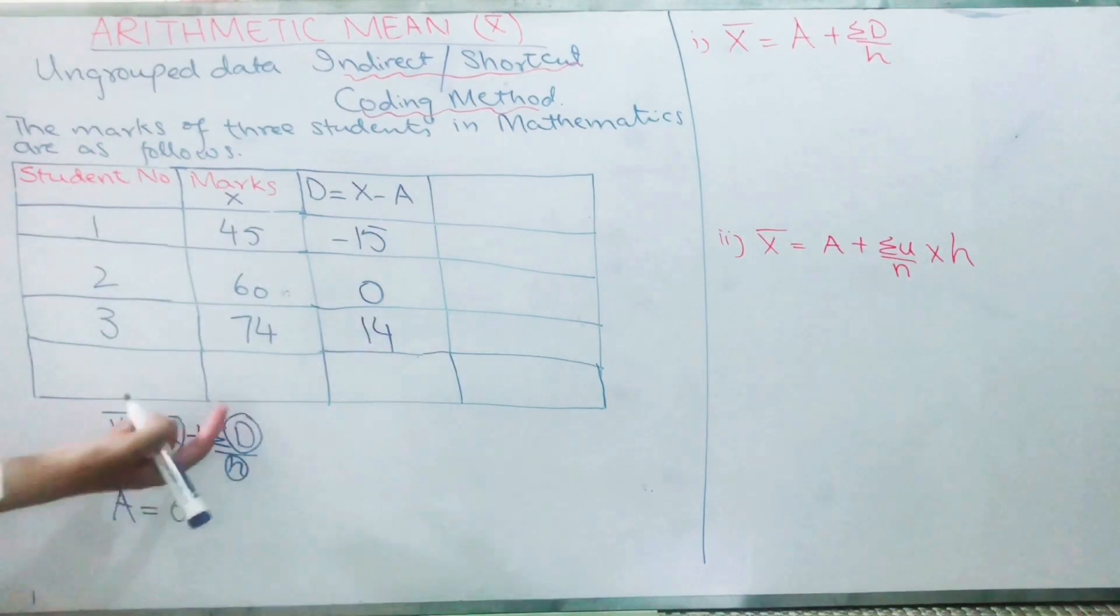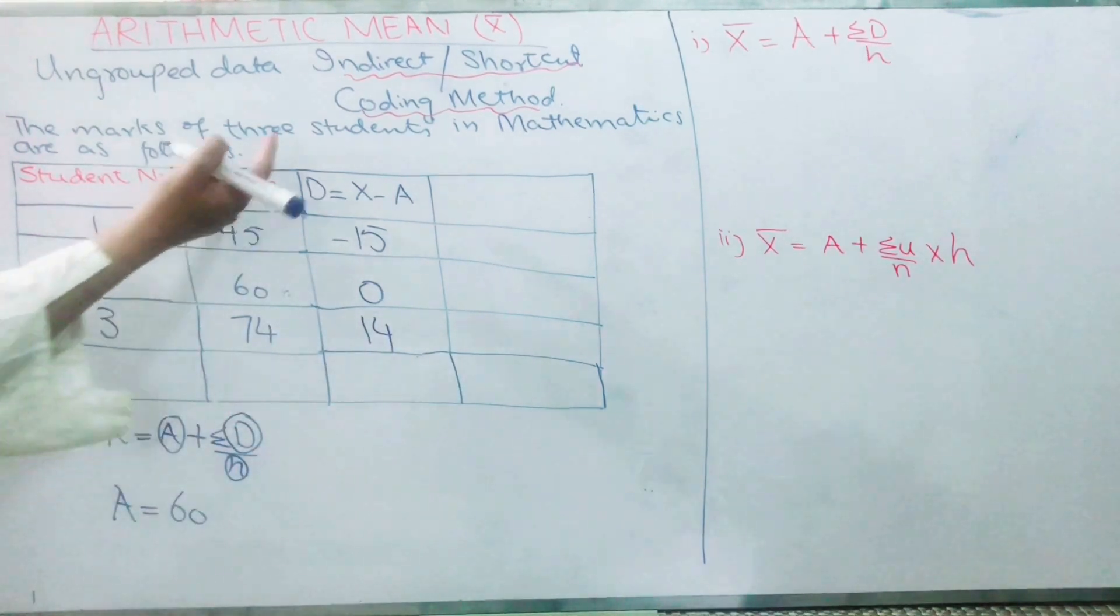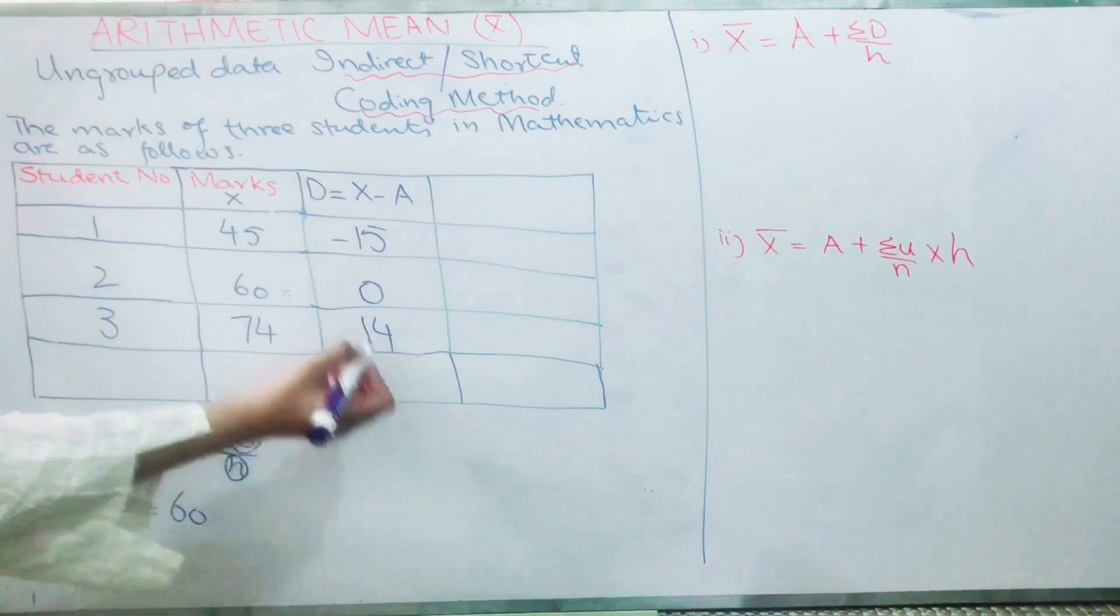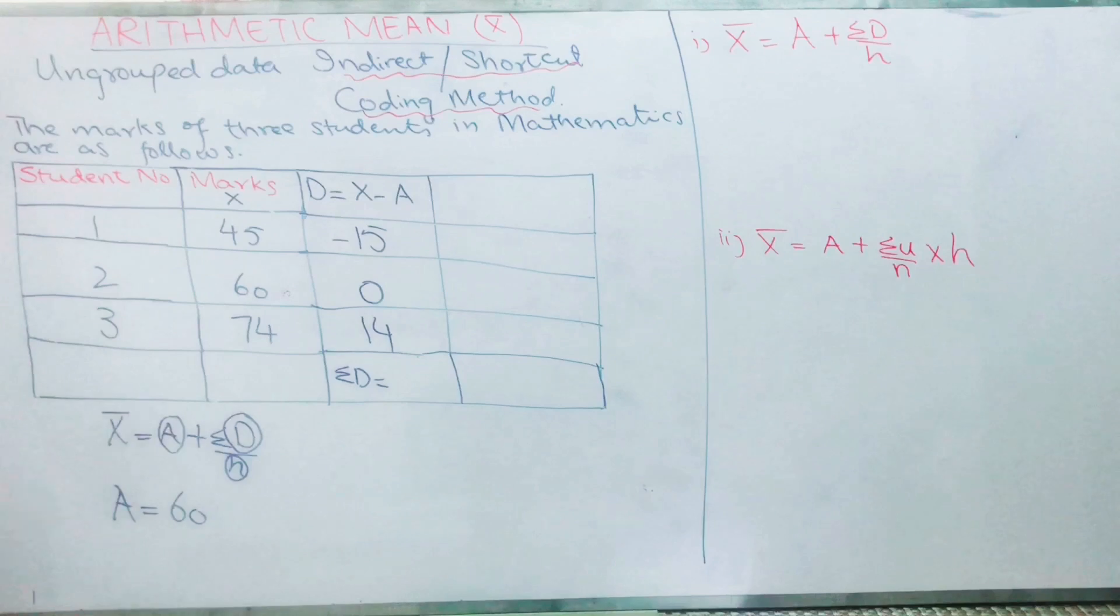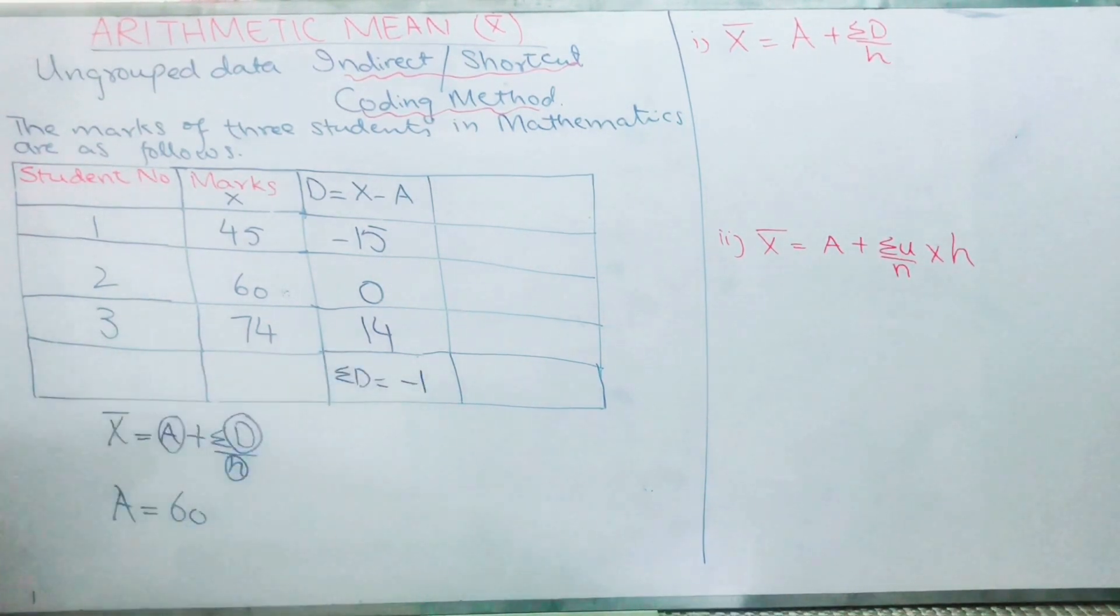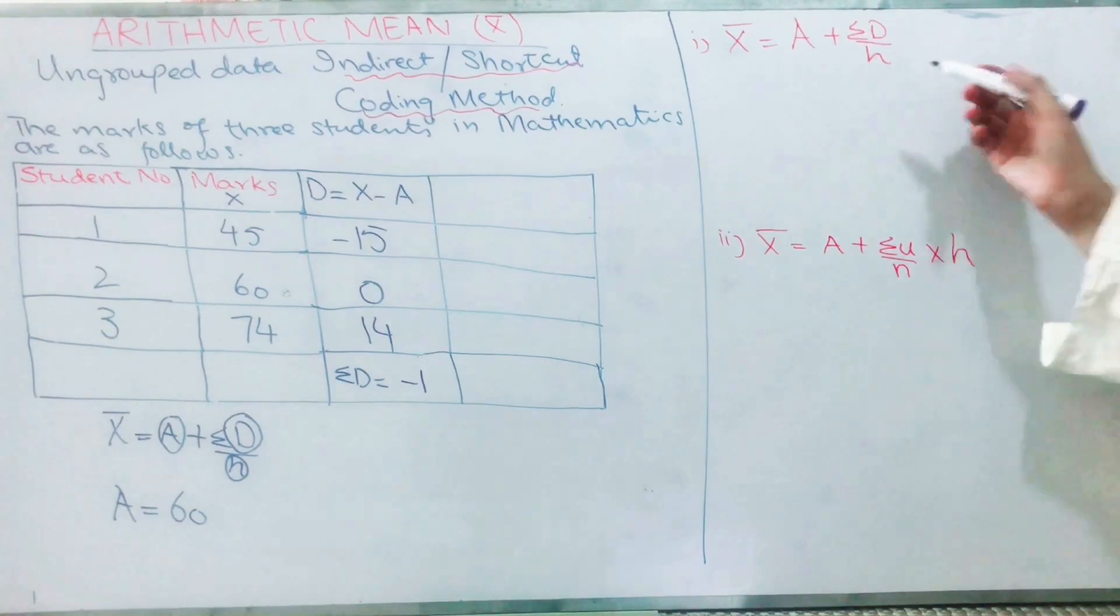And you need ΣD, which means you have to add it. So when you add all the values: minus 15, zero, and 14, you get your answer equals to minus 1. We are going to substitute our values in the formula.